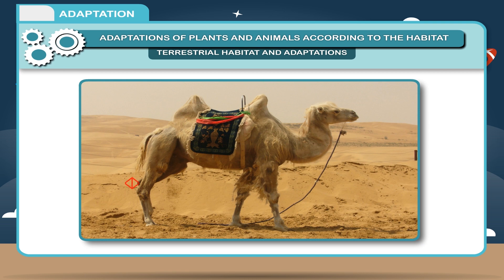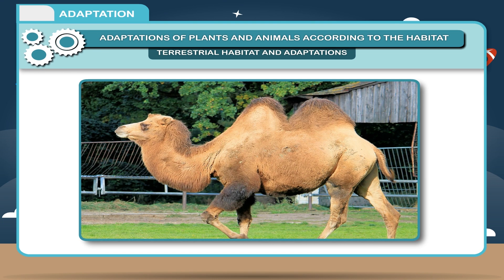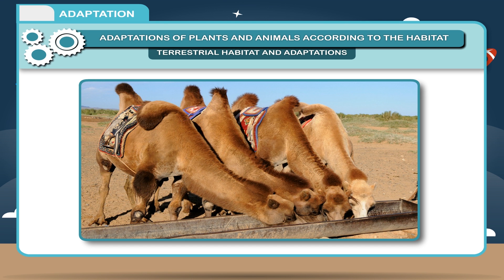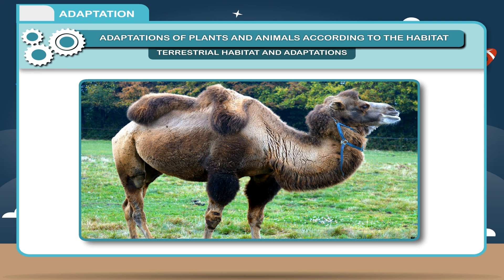A. A camel has long legs which help keep its body away from the heat of the sand on the ground. B. It has long eyelashes which help to prevent sand from entering during sandstorms. It can also close its nostrils so that sand does not enter the respiratory system. C. It has a hump where fat is stored, which provides food in times of shortage. D. It can drink a very large quantity of water and then stay without water for a long time. E. It excretes very little water in the form of urine, its dung is dry, and it does not sweat.